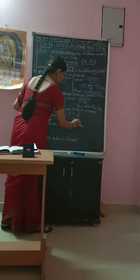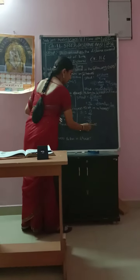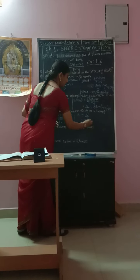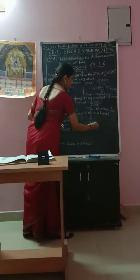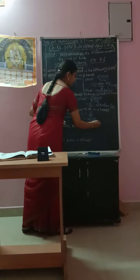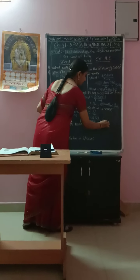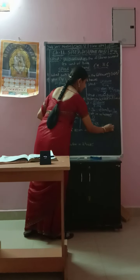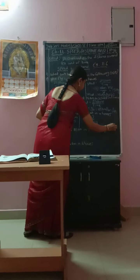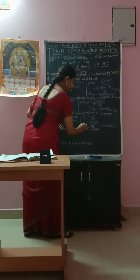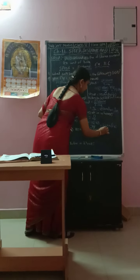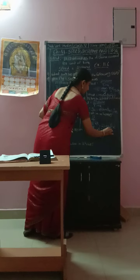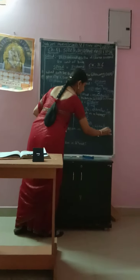92 divided by 4 hours equals 23 km per hour. So the speed is 23 km per hour.